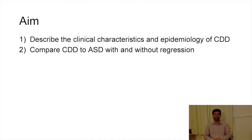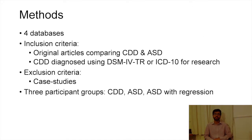To help clarify this debate, we performed the first systematic review on CDD that describes its clinical characteristics. We also sought to compare CDD to autism spectrum disorders, both with and without regression. We searched four databases and included original articles comparing CDD with ASD, where participants with CDD had to meet specific diagnostic criteria. Our three study groups were Childhood Disintegrative Disorder, Autism Spectrum Disorder, and CDD's closest control — Autism Spectrum Disorder with regression.